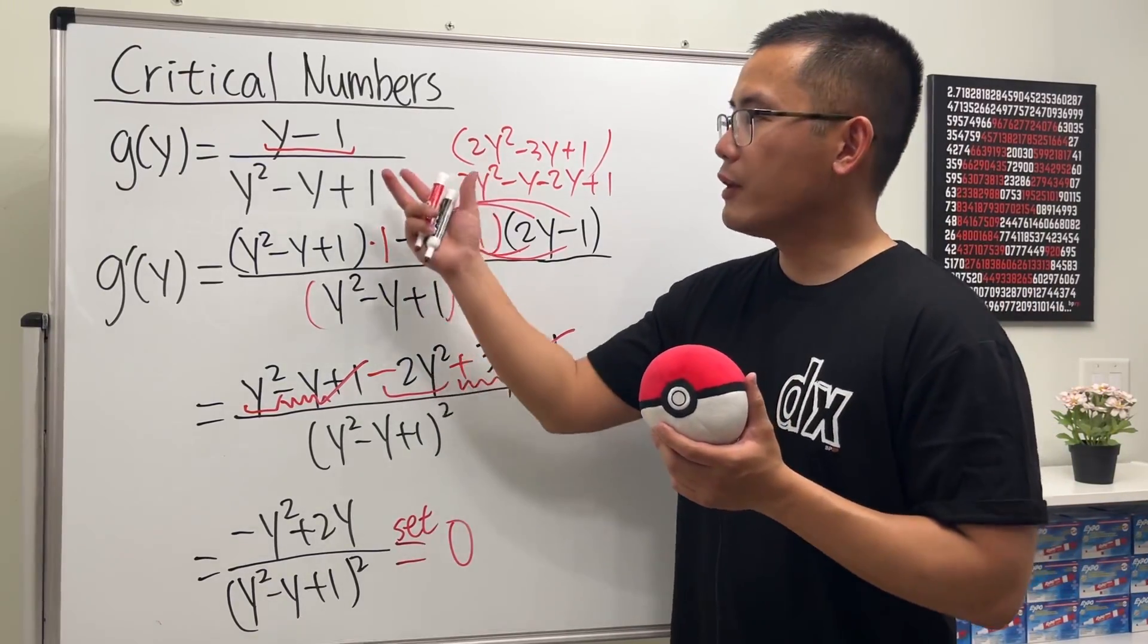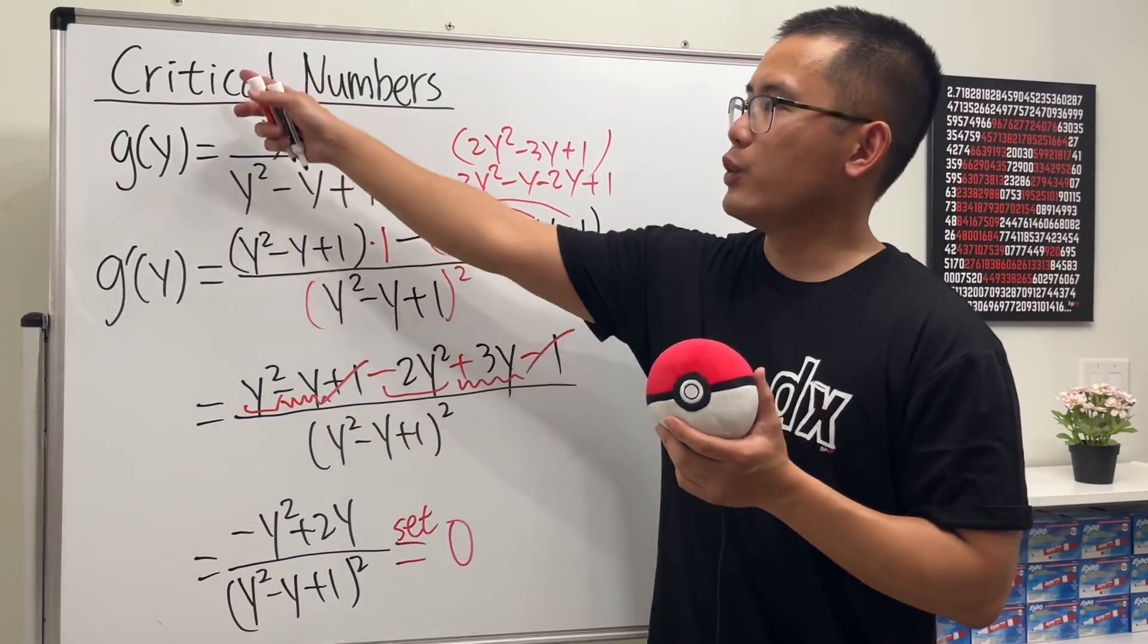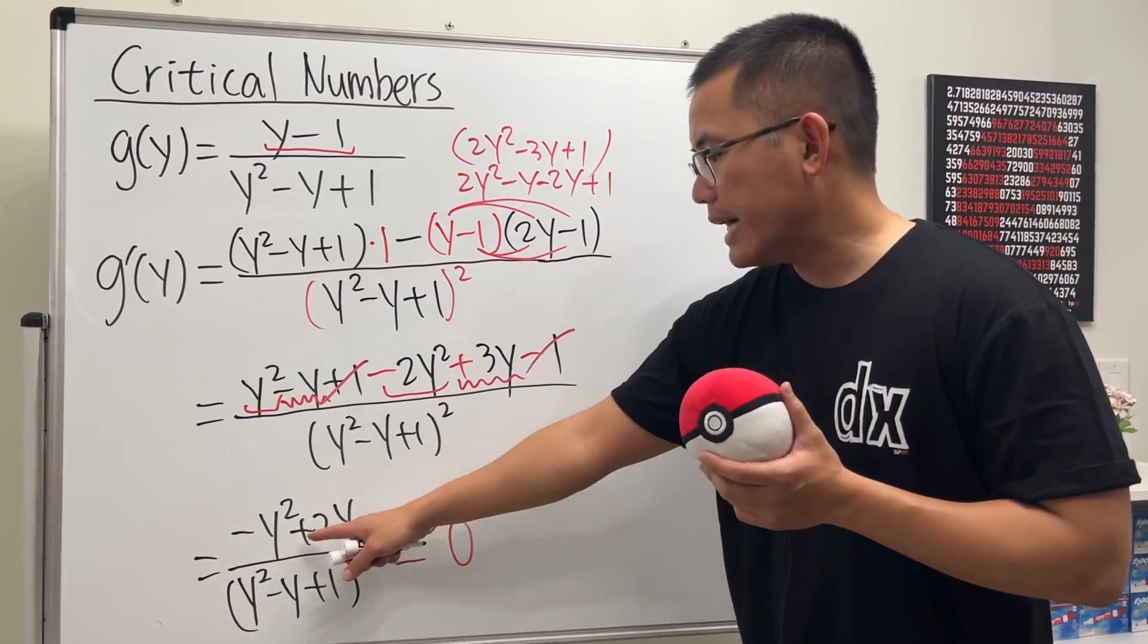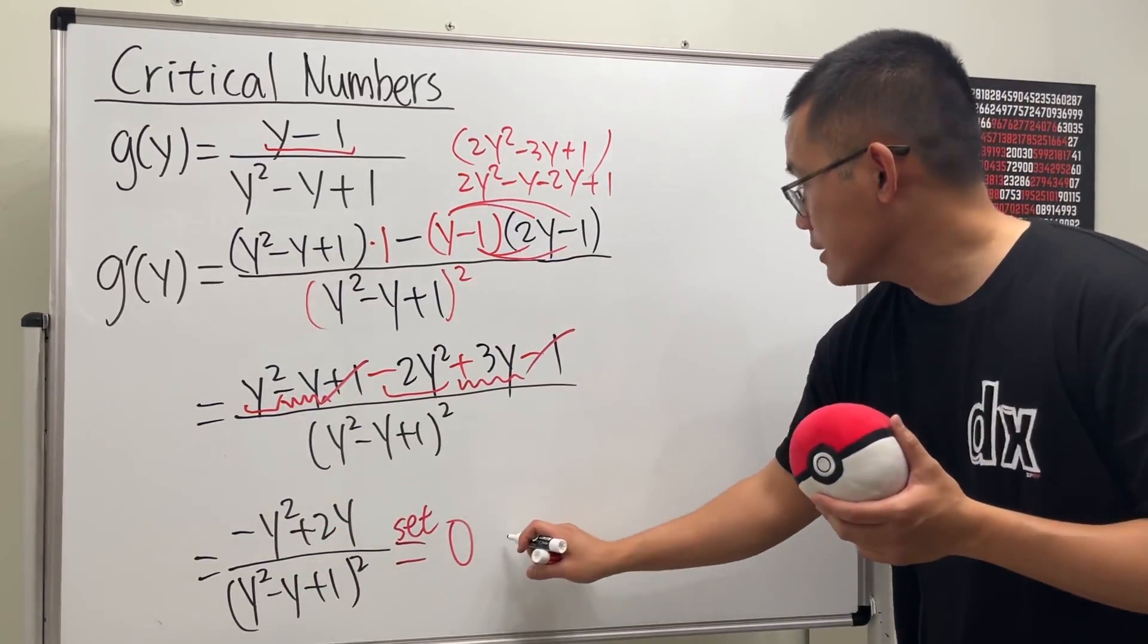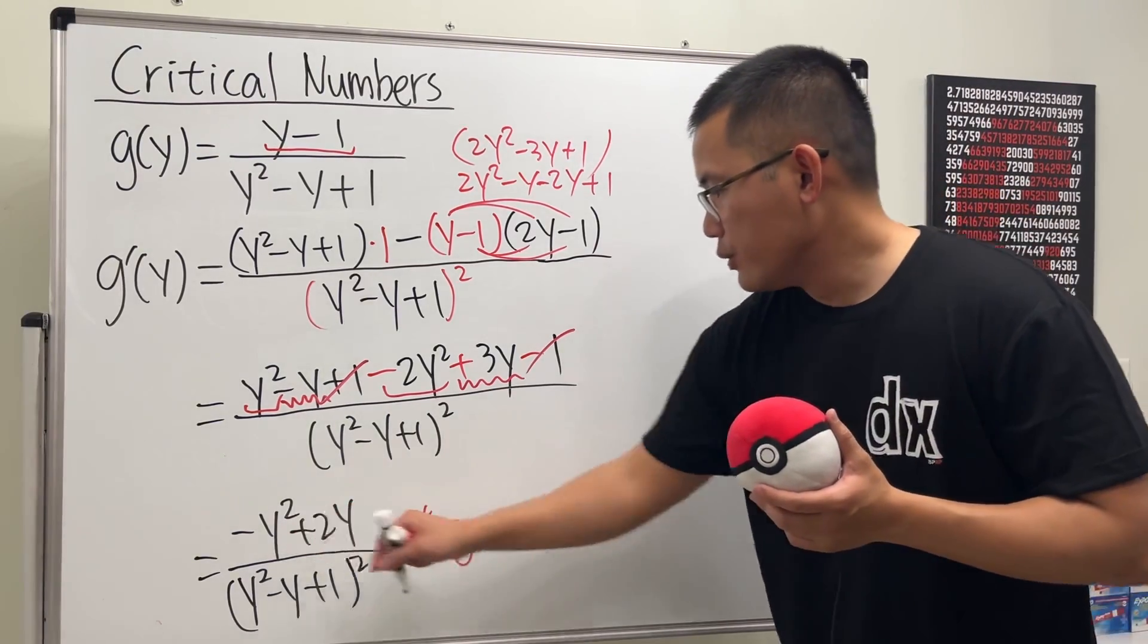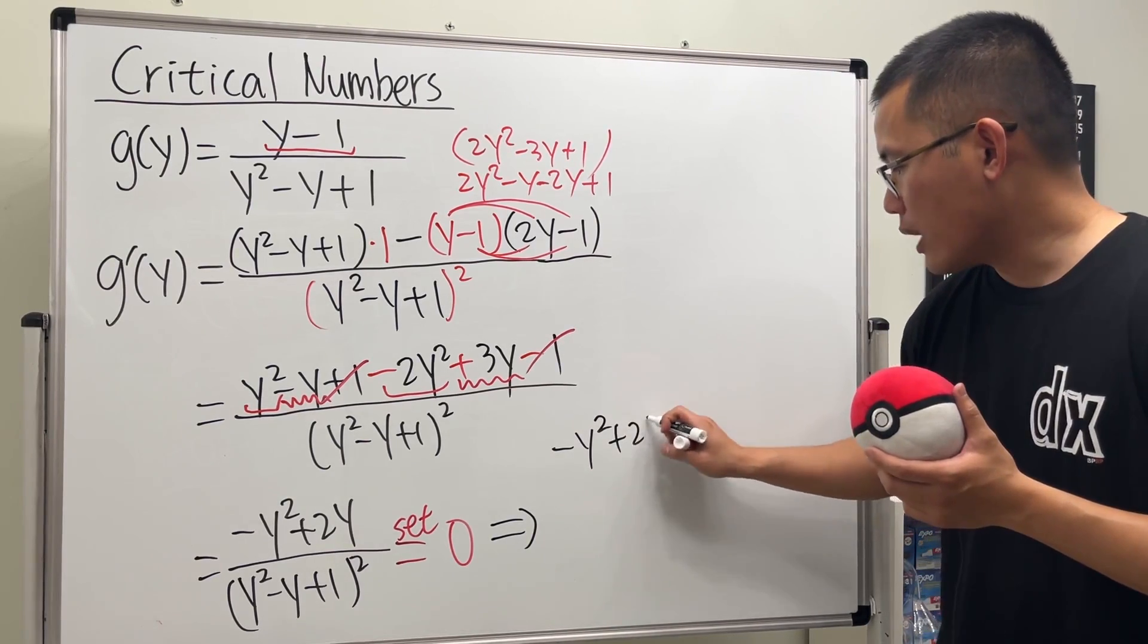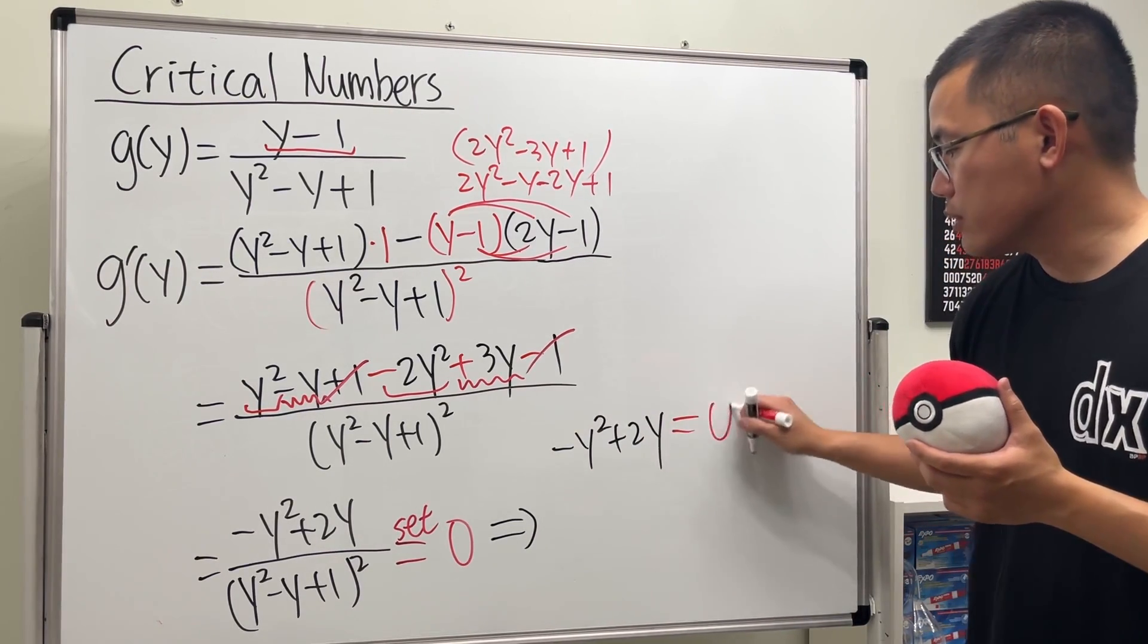So in general, when we have a rational function, if you want to find the critical numbers, just go ahead and differentiate it. And then just look at the top. So this right here will tell us, look at the top, which is negative y squared plus 2y. And you set that to be 0. And you solve it.